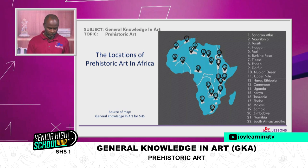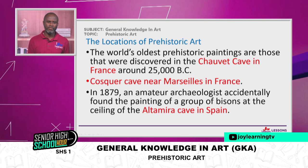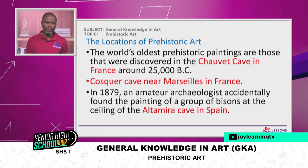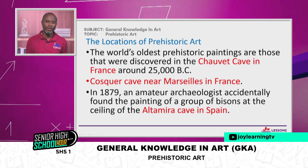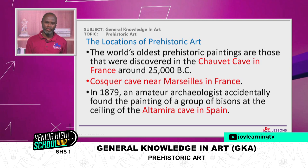The world's oldest prehistoric paintings are found in Chauvet Cave in France, around 25,000 BC. Next is the Cosquer Cave near Marseille, also in France. Then in 1879, an amateur archaeologist accidentally found paintings of a group of bisons in the Altamira cave in Spain — a very important prehistoric site. So the first two locations are from France and the last is Spain. These are locations in Europe.